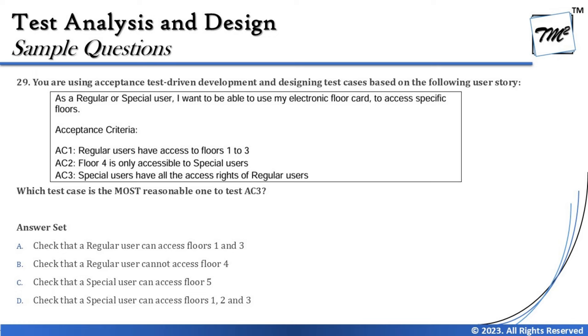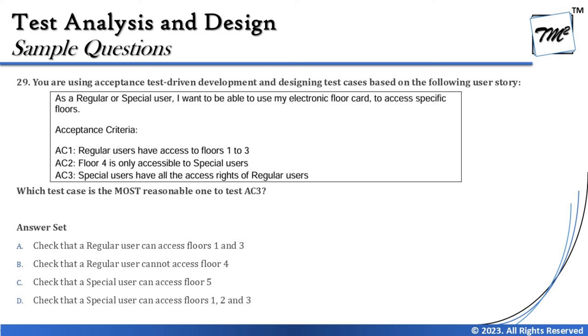Moving on to question 28, the last question from chapter 4. You are using acceptance test-driven development (ATDD) and designing test cases based on a user story: 'As a regular or special user, I want to use my electronic floor card to access specific floors.' Note that ideally this should be two separate stories — one for regular users and one for special users — but for the exam we answer it as given.